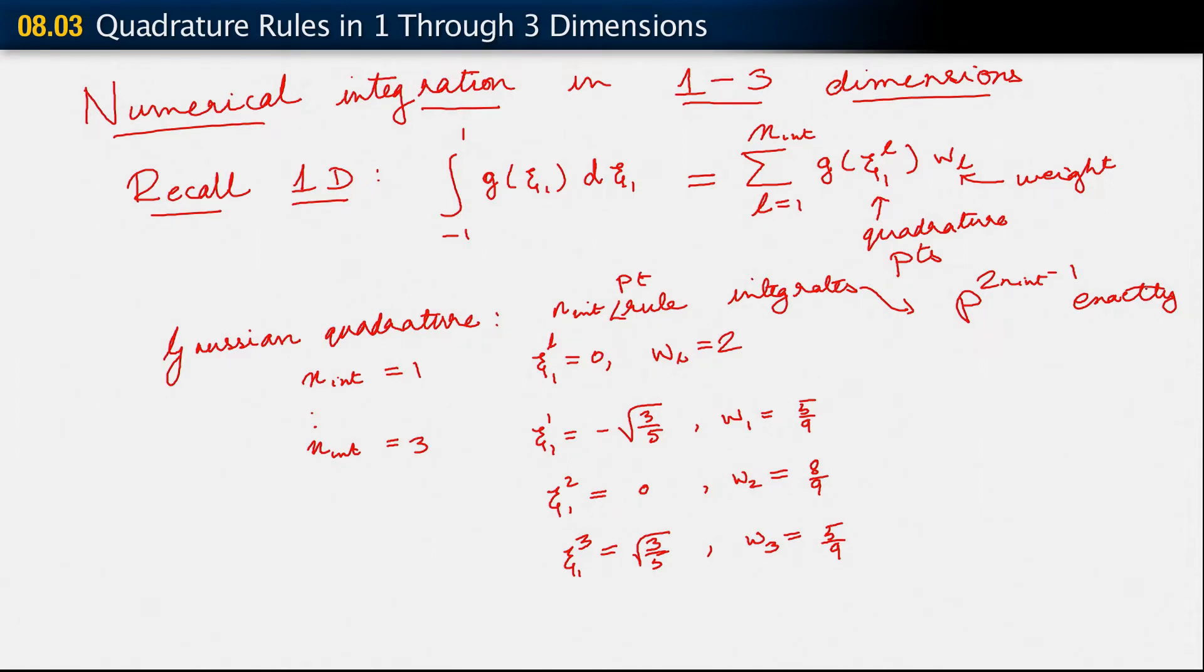Alright, so in 2D. In 2D, as you may imagine, you need to integrate terms of the following type. Need to integrate minus 1 to 1, minus 1 to 1, g, generally a function of ξ1 and ξ2, dξ1, dξ2. And these limits, let's say that is for ξ2, and this is for ξ1.